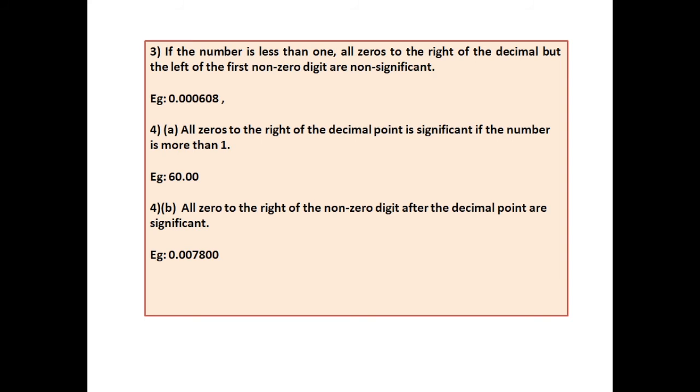Rule number 4a: All zeros to the right of the decimal point are significant if the number is more than 1. For example, in 60.00, those zeros are also significant digits. The condition is the number should be more than 1 or equal to 1.